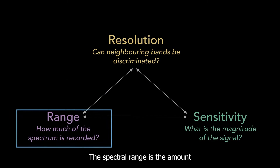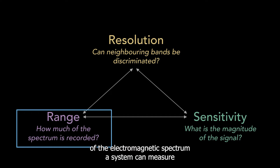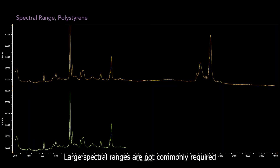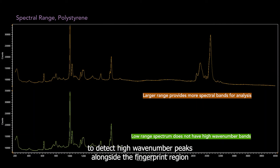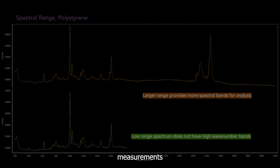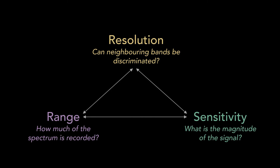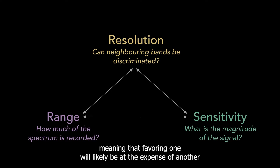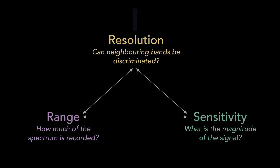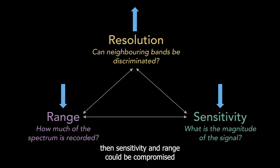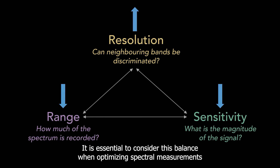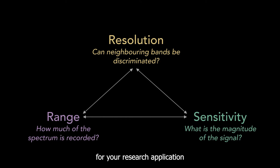The spectral range is the amount of the electromagnetic spectrum a system can measure. Large spectral ranges are not commonly required. However, a more extensive range can be advantageous when a user wishes to detect high wavenumber Raman peaks alongside the fingerprint region, or even configure a system for photoluminescence measurements. These three parameters are always in balance, meaning that favouring one will likely be at the expense of another. For example, if a user wishes to optimize resolution, then sensitivity and range could be compromised. It is essential to consider this balance when optimizing spectral measurements for your research application.